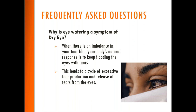Why is eye watering a symptom of dry eyes? The cornea has thousands of nerve endings. If the corneal nerves sense that the eyes are dry or irritated, they send a reflex arc to the lacrimal glands signaling that the eyes are very dry and need reflexive tearing to stay moist. The problem is that these reflex tears do not help lubricate your eyes. So many people with excessive tearing mistakenly think their eyes are not dry and that they're producing too much tears, when in fact the opposite is true.